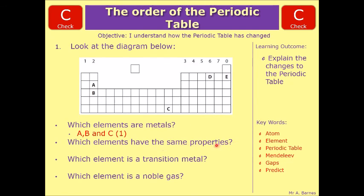Which elements have the same properties? They're the ones in the same group. Groups are going down. So it's A and B.